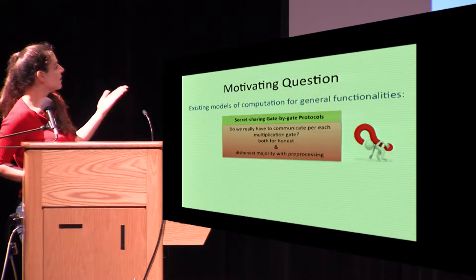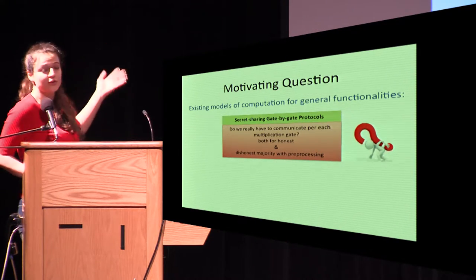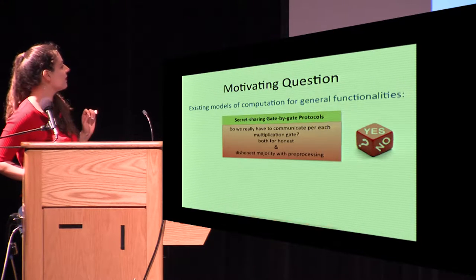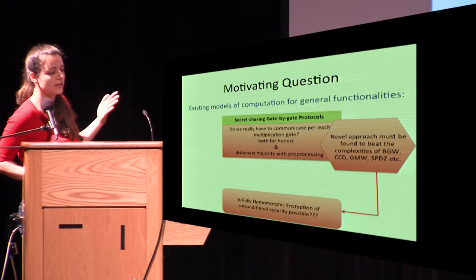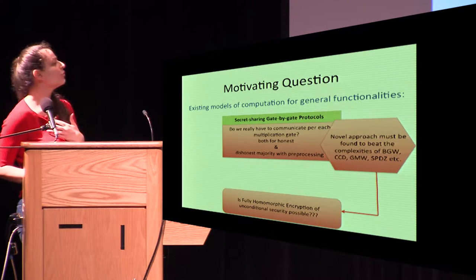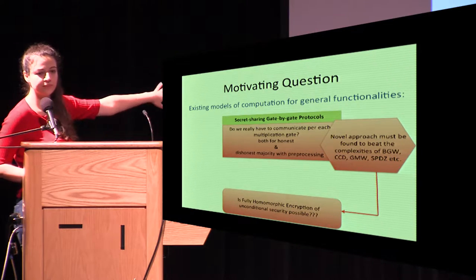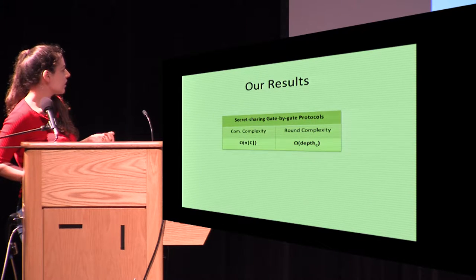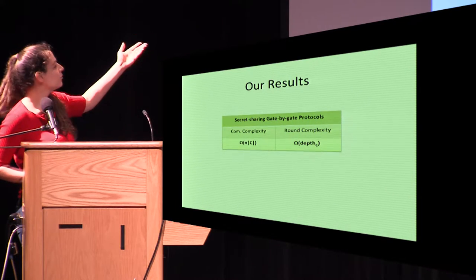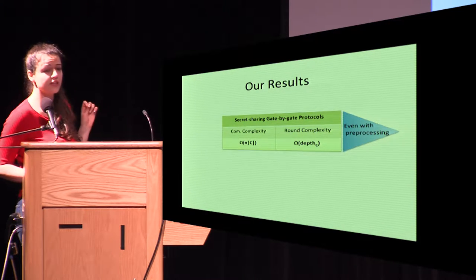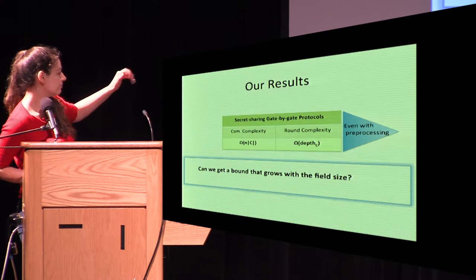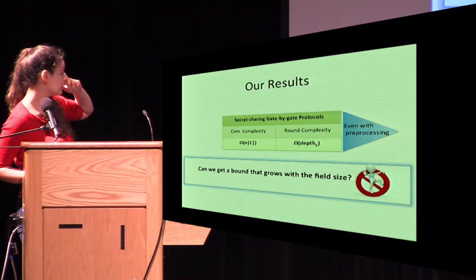The question is whether we can significantly improve on current protocols and avoid communicating per multiplication gate. The answer is no — we do have to communicate per multiplication gate. This is a partial answer showing that if we want to achieve the goal of reducing communication, we need to invent a completely new approach, or prove it's impossible. Our results show you must communicate per multiplication gate, round complexity is proportional to multiplicative depth, and this holds even with pre-processing. We also show bounds that don't grow with the field size.